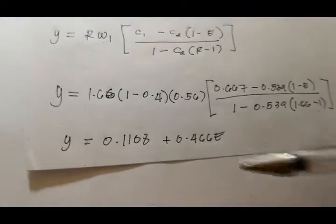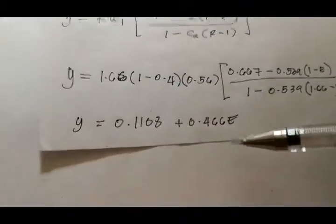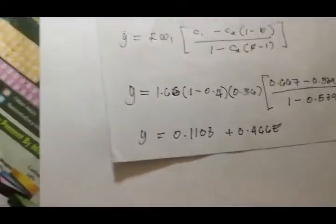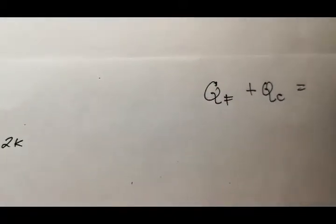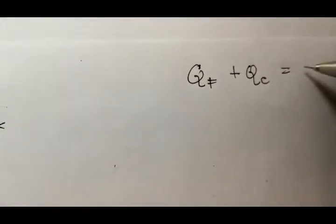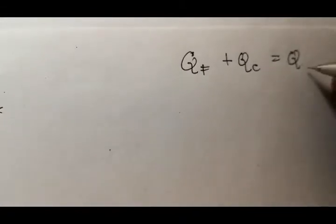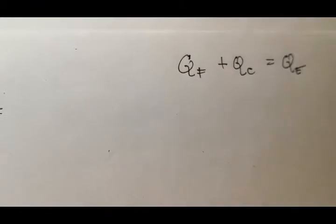So we have now expressed the crystal yield in terms of the fraction of water evaporated. So if we do a heat balance, the heat balance in the crystallizer will be equal to the heat provided by the feed plus the heat of crystallization is equal to the heat for water evaporation, QE.